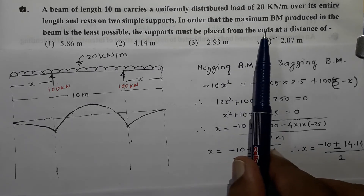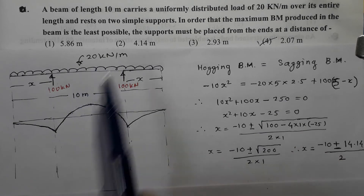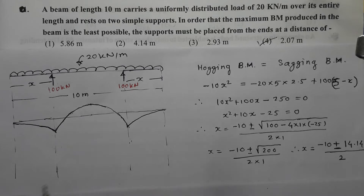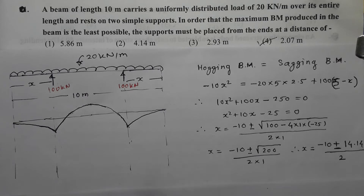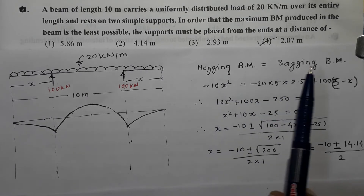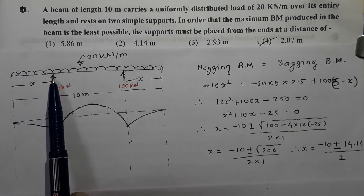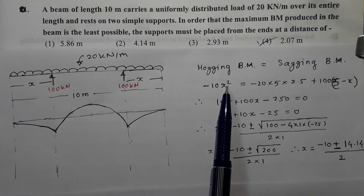They have asked to get the maximum bending moment produced in the beam, which should be least possible. The question is: which maximum bending moment — sagging or hogging? We will have to consider both. Both should have the least possible value. This condition is satisfied only when the hogging bending moment is equal to the sagging bending moment. The hogging bending moment at the support can be obtained as 20 × x × x/2, which is 10x². As it is hogging, I am putting a negative sign.